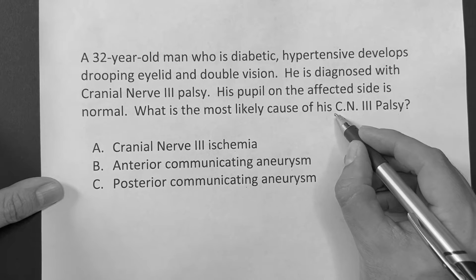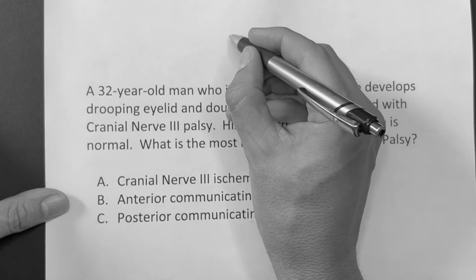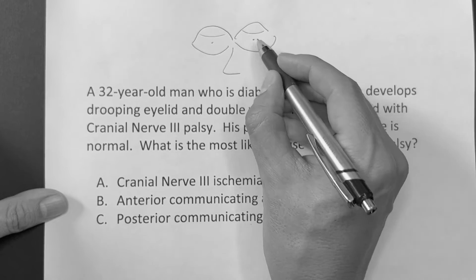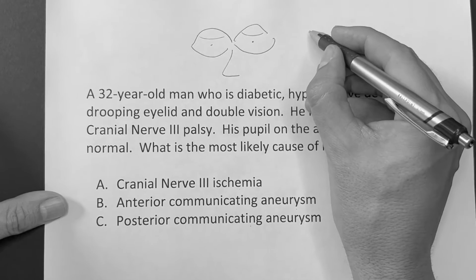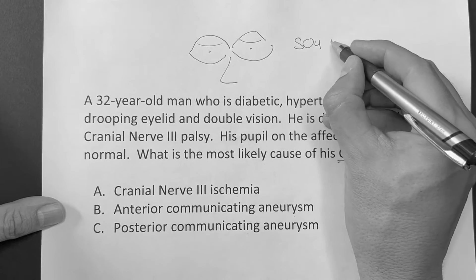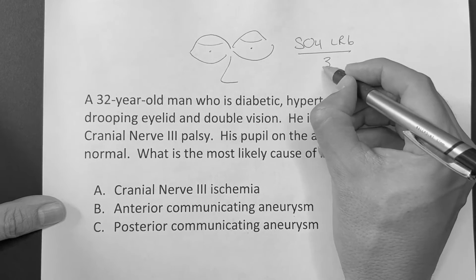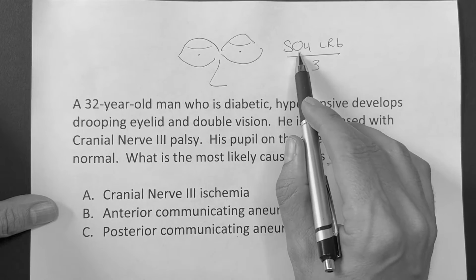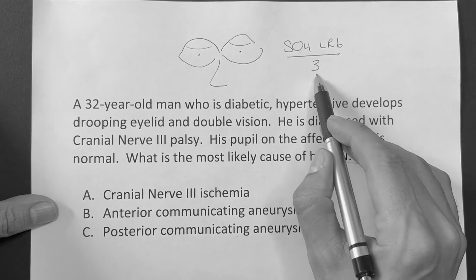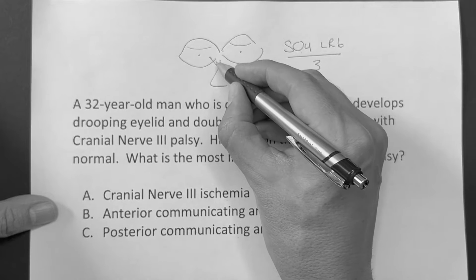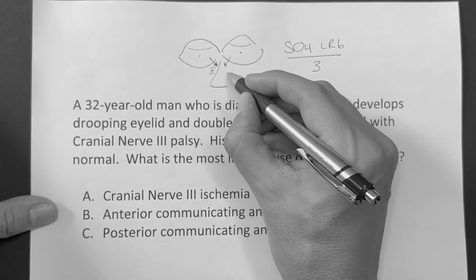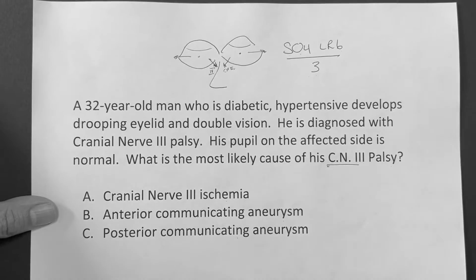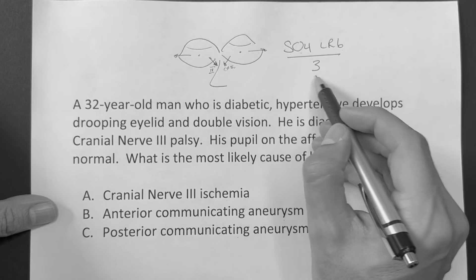So let's think about cranial nerve 3 palsy. What do we know about cranial nerve 3? It affects the extraocular eye muscles. The mnemonic we always use is SO4, LR6, all over 3. That covers all the movements of the eye. Superior oblique is cranial nerve 4. Lateral rectus is cranial nerve 6. And everything else is cranial nerve 3. The superior oblique allows us to go down and in — that's cranial nerve 4. The lateral rectus allows us to move the eye out laterally. So everything else — all the other directions — is innervated by cranial nerve 3.